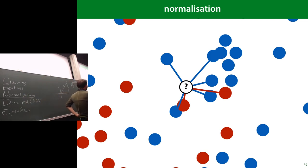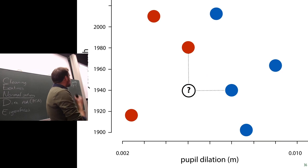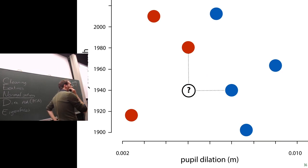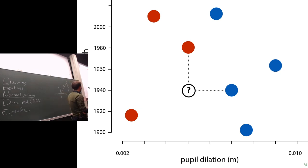A motivating example for normalization: imagine k-nearest neighbor classification with two features — year of birth and pupil dilation. In your feature space, two neighbors might look visually close. But the actual distances are 40 for year of birth and 0.002 for pupil dilation. The k-NN classifier will essentially ignore year of birth and only look at pupil dilation, even though in the shape of the data they seemed comparable.